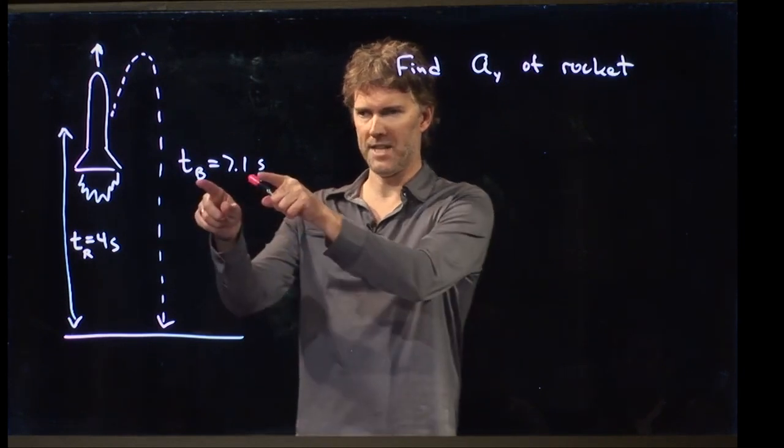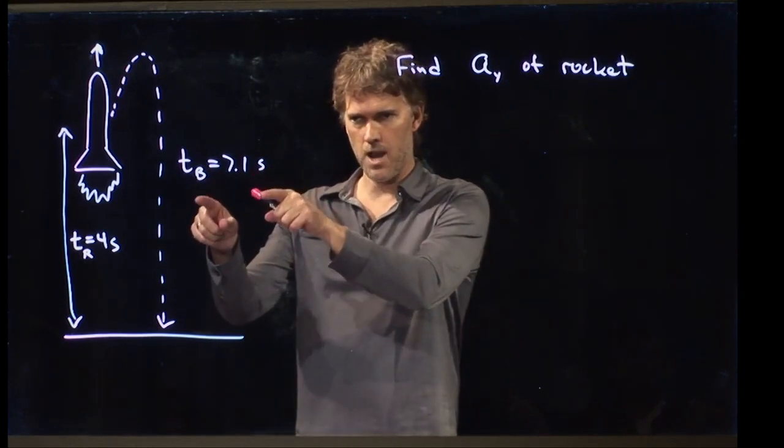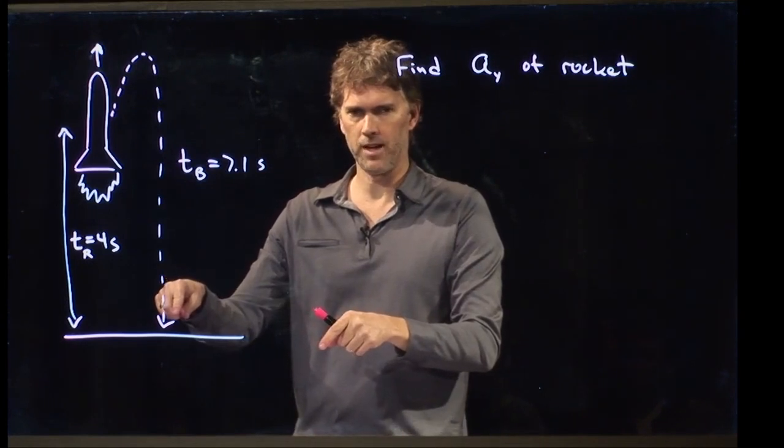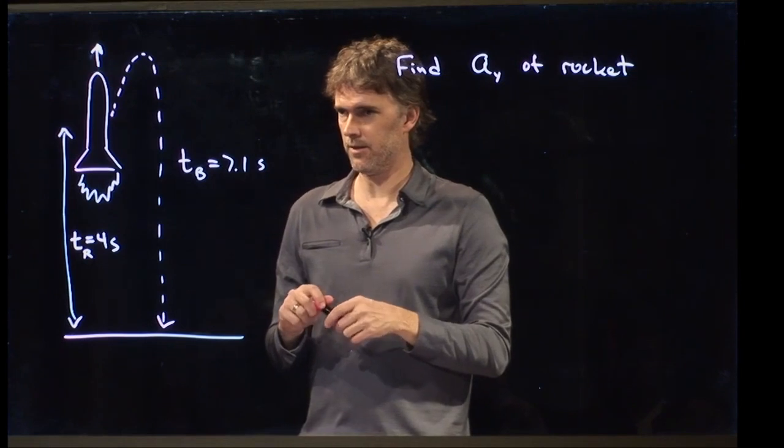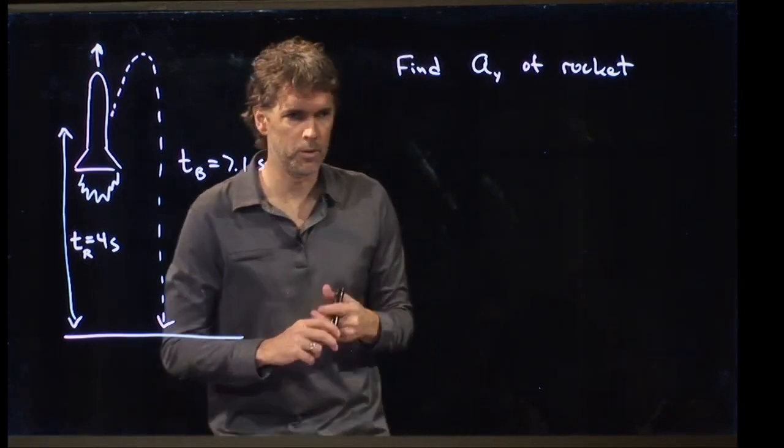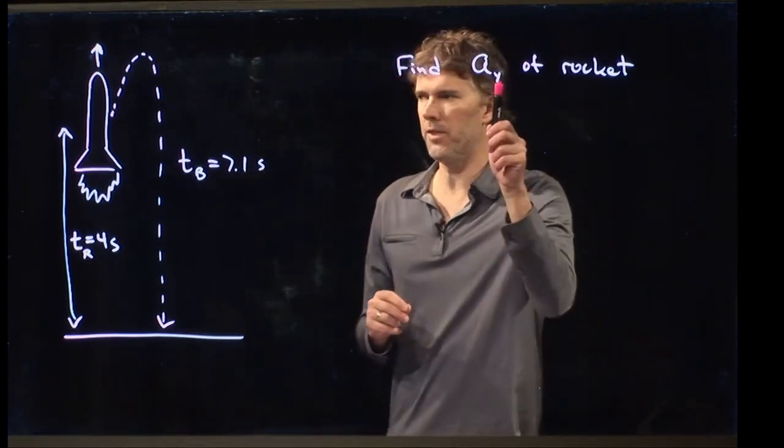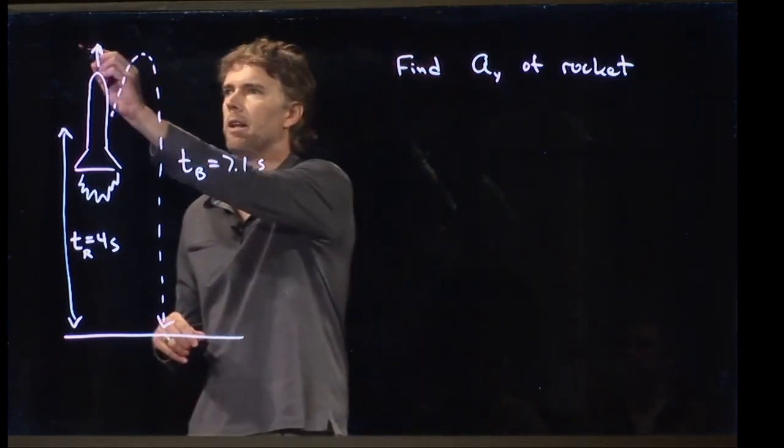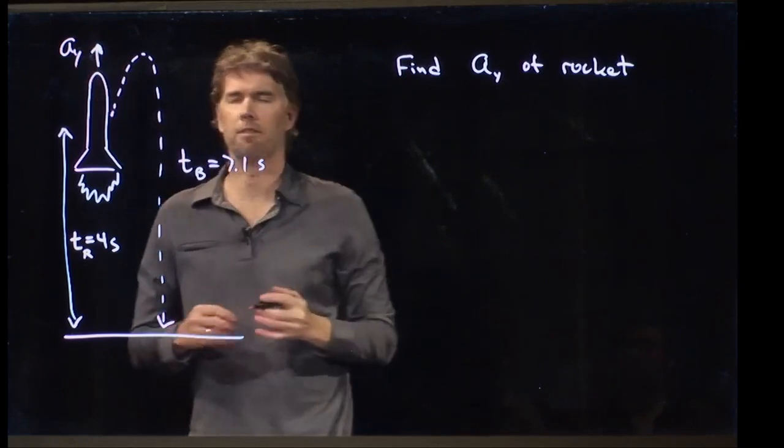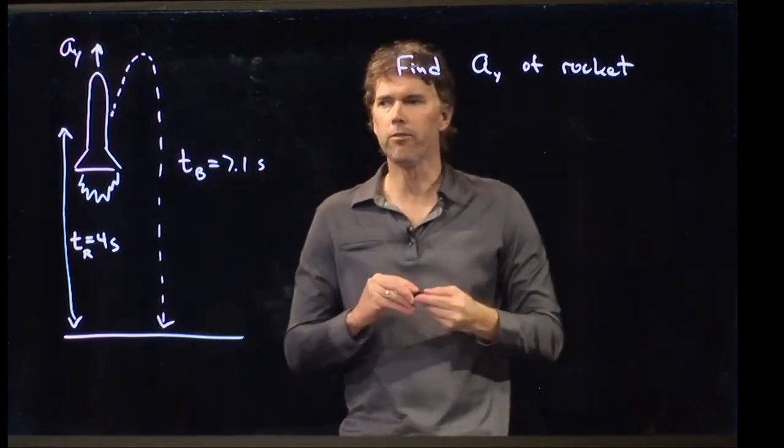So this is the total time that it's in the air, not at the same clock time, 7.1 seconds it hits the ground. So what we need to figure out is what the acceleration is of this rocket. This rocket is accelerating upwards at some constant acceleration, and we need to figure it out.